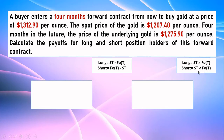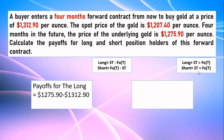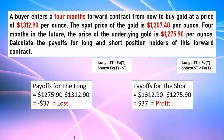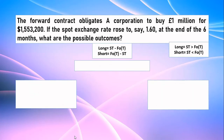Now let's do the math. For the long position, the formula is future spot price minus forward price: $1,275.90 minus $1,312.90, which gives minus $37. So the buyer is making a loss of $37. For the seller, the formula is forward price minus future spot price: $1,312.90 minus $1,275.90, giving a profit of $37. So the buyer's prediction was wrong but the seller's prediction was accurate.